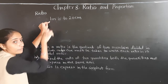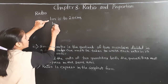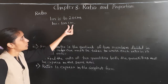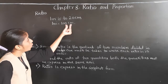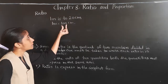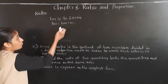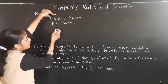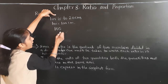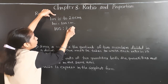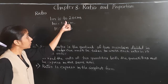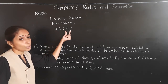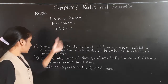We convert meter into centimeter. 1 meter is equal to 100 centimeters, so both quantities are now in the same unit: 100 centimeters is to 20 centimeters. Now let us find the ratio of 100 is to 20.